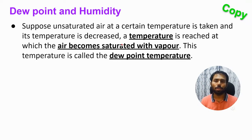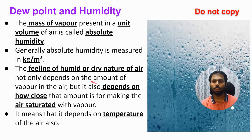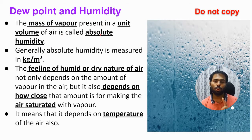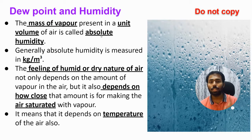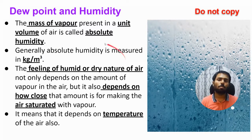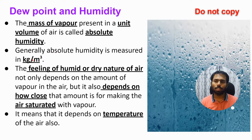An important definition to memorize: the mass of vapor present in unit volume of air is called absolute humidity. Unit volume means one cubic centimeter or one cubic meter. So absolute humidity is the mass of water vapor — how much water vapor by weight — present in one unit volume of air. Generally absolute humidity is measured in kilograms per cubic meter — kg being the mass of water vapor present and m³ being the unit volume.